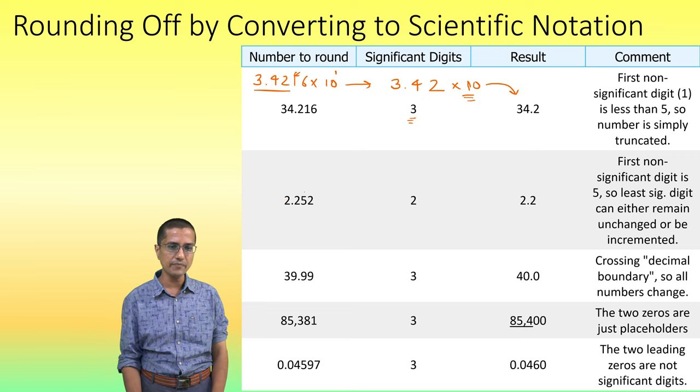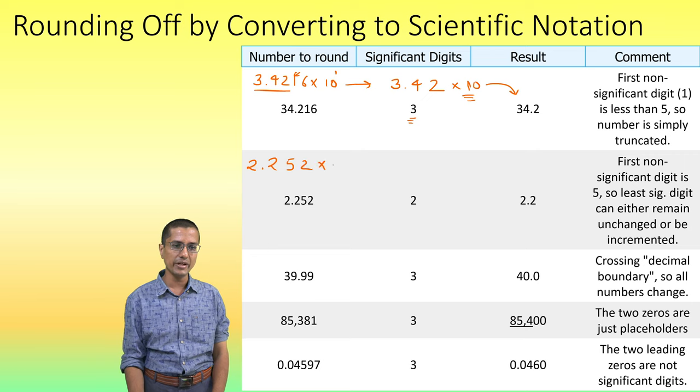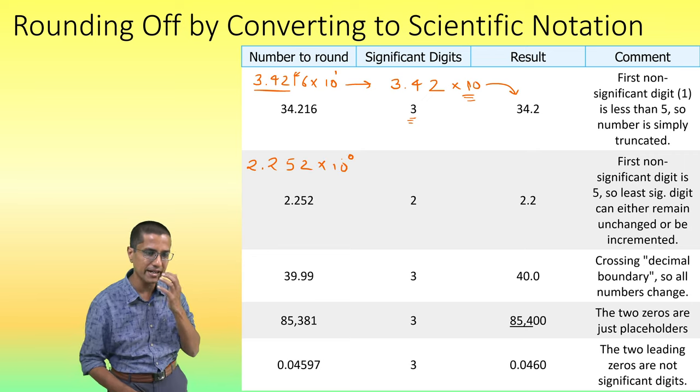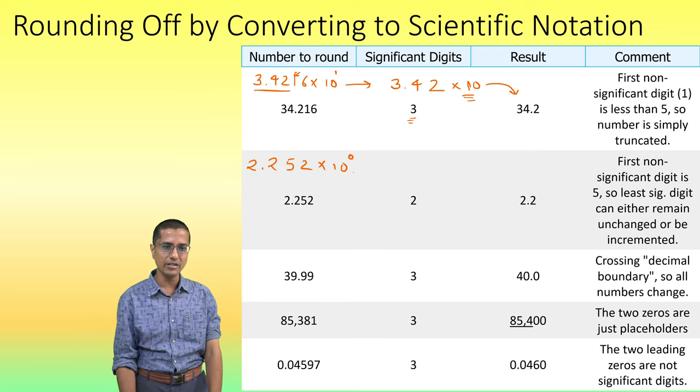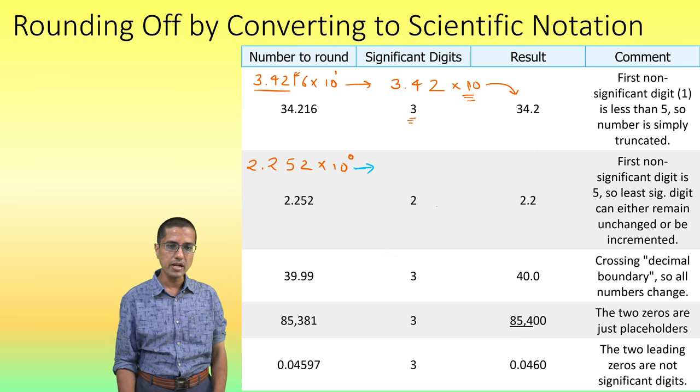Now the next one is already given in a very nice scientific fashion. So 2.252 × 10⁰. For the sake of completeness, we will just write it like this because I have to explain things. I just have to make sure that students do not get confused. So, I want to keep only the first two digits.